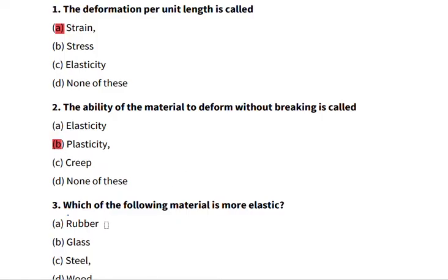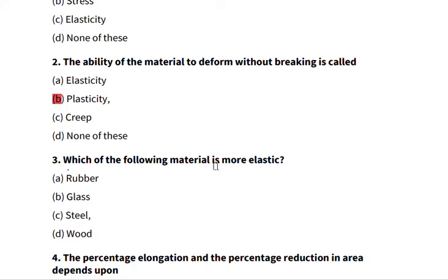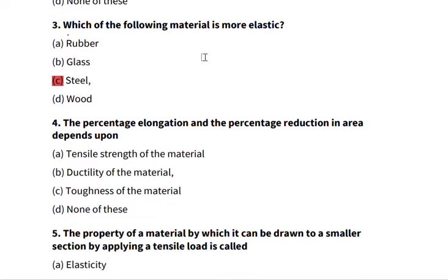Number three: which of the following material is more elastic? That means it can regain its shape when a force is being applied and removed. We have rubber, glass, steel, and wood. The most elastic is steel. Steel is able to regain its shape and size.